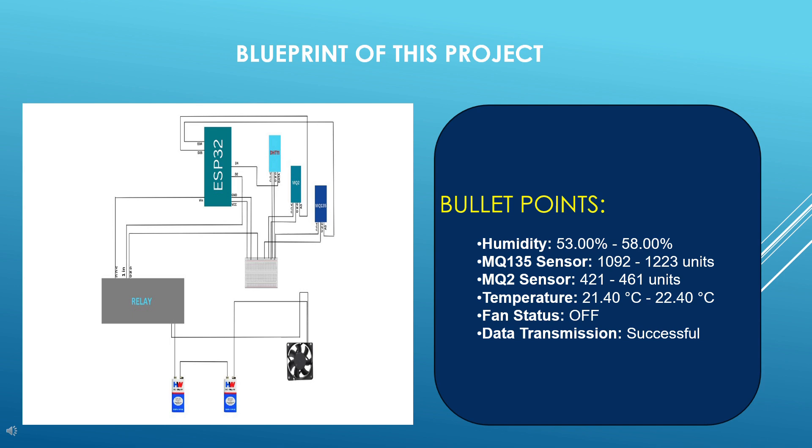Relay module controls the power supply to external components like fans for ventilation. Power supply and fan: the power source for the system and a fan that can be activated based on environmental conditions.